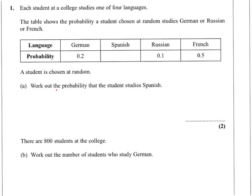In this question we have to work out the probability that the student studies Spanish. As probabilities add up to 1, the probability of Spanish will be 1 take away the sum of the rest of the other probabilities. So 0.2 plus 0.1 plus 0.5.